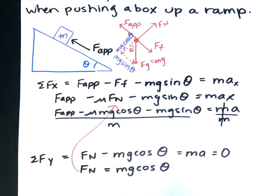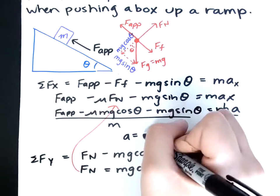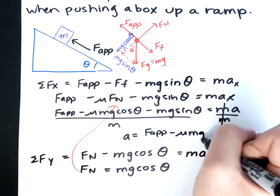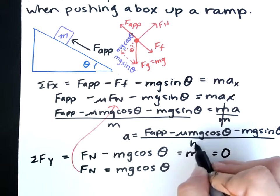Okay, so we're left with acceleration is equal to this whole entire thing right here. F applied minus mu mg cos theta minus mg sine theta all over mass.